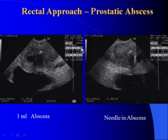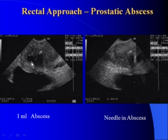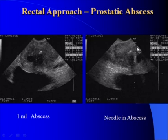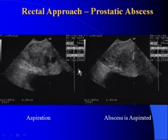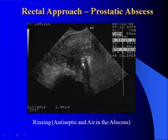Another example of an endorectal approach: rectal aspiration of a prostatic abscess. You see the prostate and a small cystic mass of up to 1 cc which turned out to be a prostatic abscess, causing very severe clinical findings despite active antibiotic therapy — it was resistant to treatment. The needle is inserted using the rectal approach into the cystic mass, which had very viscous content. You see the gradual aspiration of the abscess and rinsing of the residual cavity with saline.